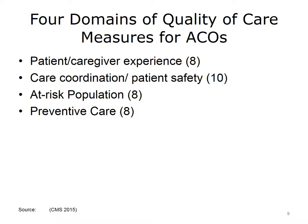The quality of care measures used by ACOs in two of the Medicare ACO models include 33 nationally recognized quality measures in the four domains of patient-caregiver experience, care coordination and patient safety, at-risk populations, and preventive care. More detailed descriptions of all measures can be found in the documentation provided by CMS.